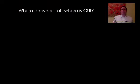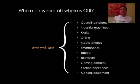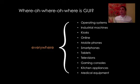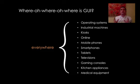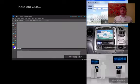So where is GUI? It pretty much is everywhere. By everywhere, I mean it's on operating systems, industrial machines, kiosks, tablets, smartphones, medical equipment, kitchen equipment these days — everywhere. That's GUI.